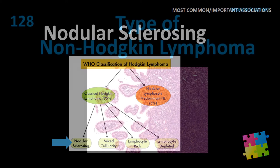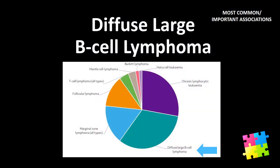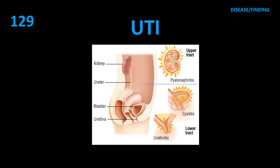Item 127: Most common type of Hodgkin lymphoma — diffuse large B-cell lymphoma.